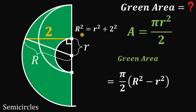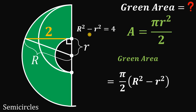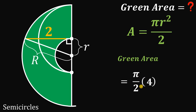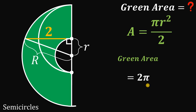Applying the Pythagorean theorem: R² = r² + 2². Subtracting r² from both sides, we get R² − r² = 2² = 4. So now, using this value, the green area equals π/2 multiplied by 4, which equals 2π.